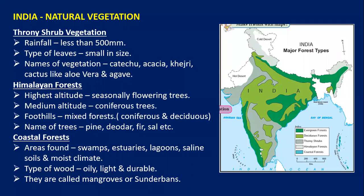Next is thorny shrub vegetation, marked in gray. It is found in areas with less than 500 millimeters of rainfall. Since the rainfall is less, the leaves are very small in size. Examples are cactus, acacia, khejri, cachu, aloe vera, and agave. It can be found in parts of Gujarat, Rajasthan, the northern hilly regions, and the northeastern parts of India.